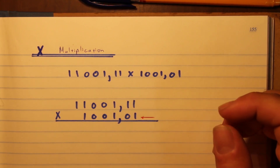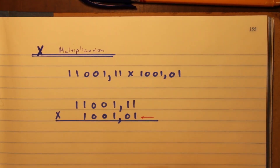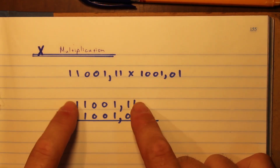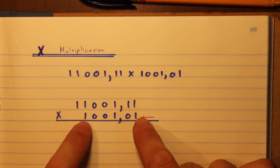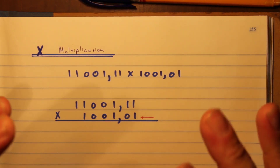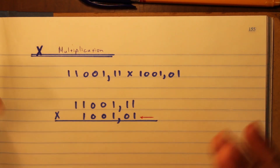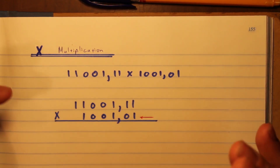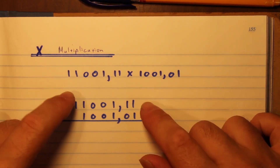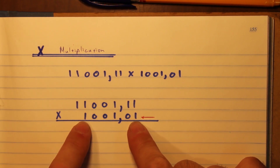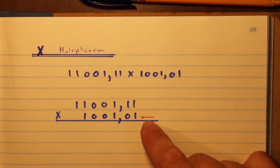What we do to start off is look at the bottom number. We always look at the bottom number — it doesn't matter which number is on top and which is at the bottom, because it's multiplication. Two times three is six and three times two is still six. So it doesn't matter which one you put on top or bottom, as long as you follow the same method.